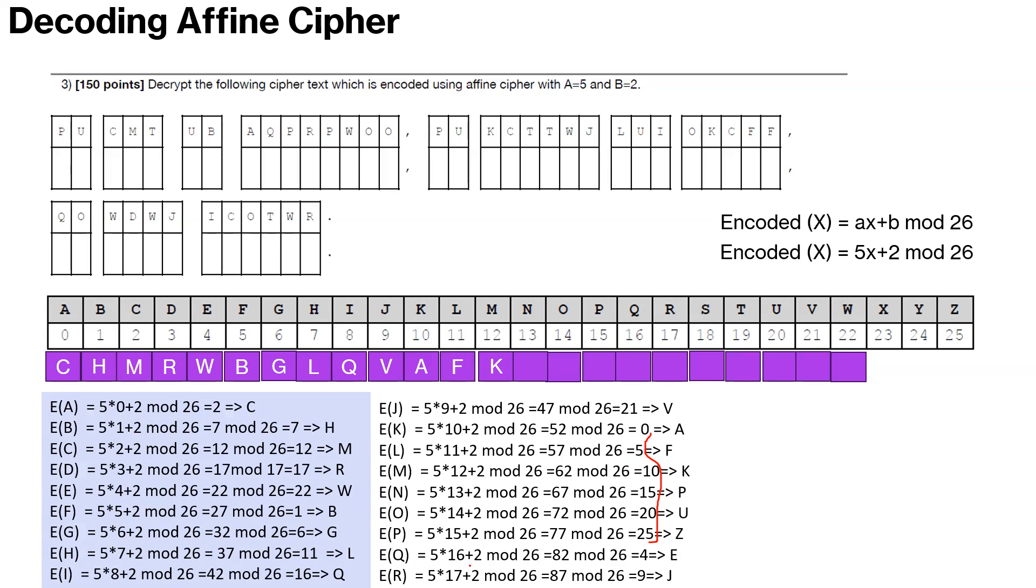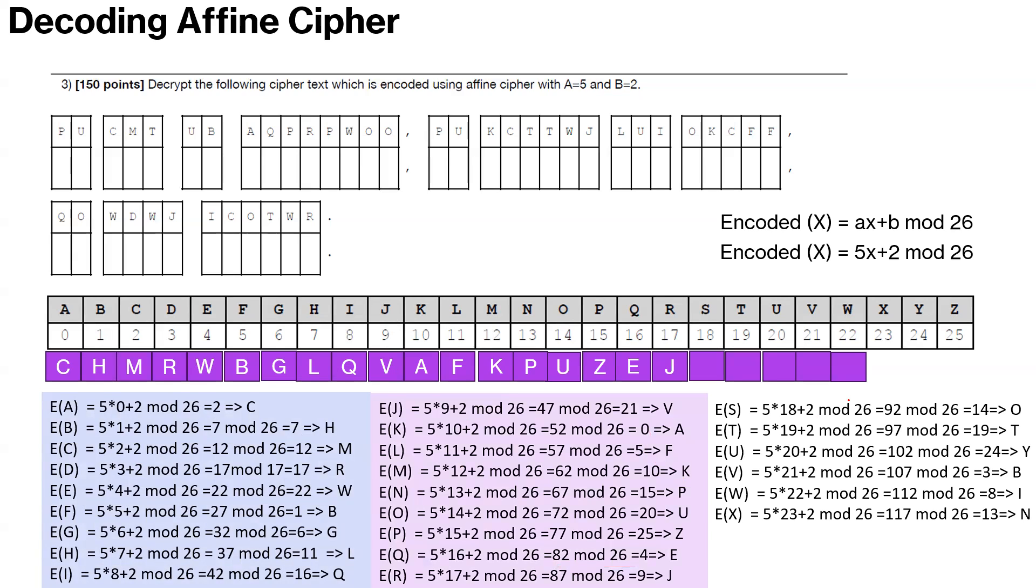This makes it easy. With practice you should be able to become faster in this. So Q is 5 times 16 which is 80, 80 plus 2, 82 mod 26 is 4. 3 times 26 is 78, so 4, which is E. This is the approach. You don't worry whether that will be used in ciphertext.